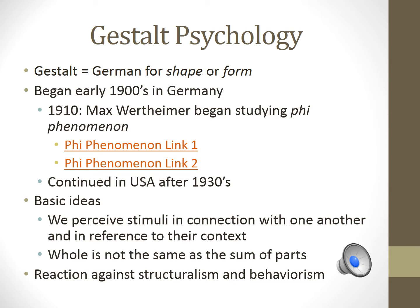Max Wertheimer was really the first to get this approach started. In the early 1900s, based on his experience riding a train and noticing that certain aspects of the environment seem to pass by at different rates — some things speeding by very fast, other things off in the distance moving more slowly — he began to study perception of movement. As he did so, he got interested in and explored this idea of the Phi phenomenon.